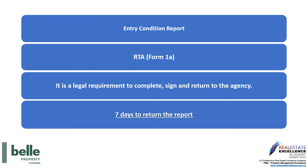The Form 1A is the Entry Condition Report. It is a legal requirement for you to complete, sign, and return the Form 1A to our agency within seven days of taking possession. You are given a copy of this form completed and signed by our agency on or before the day you take possession — usually the day you collect the keys. During your legal time period to complete, sign, and return the Form 1A, if you have any questions or concerns, please contact our property manager and return the report within the seven days set out in the legislation.